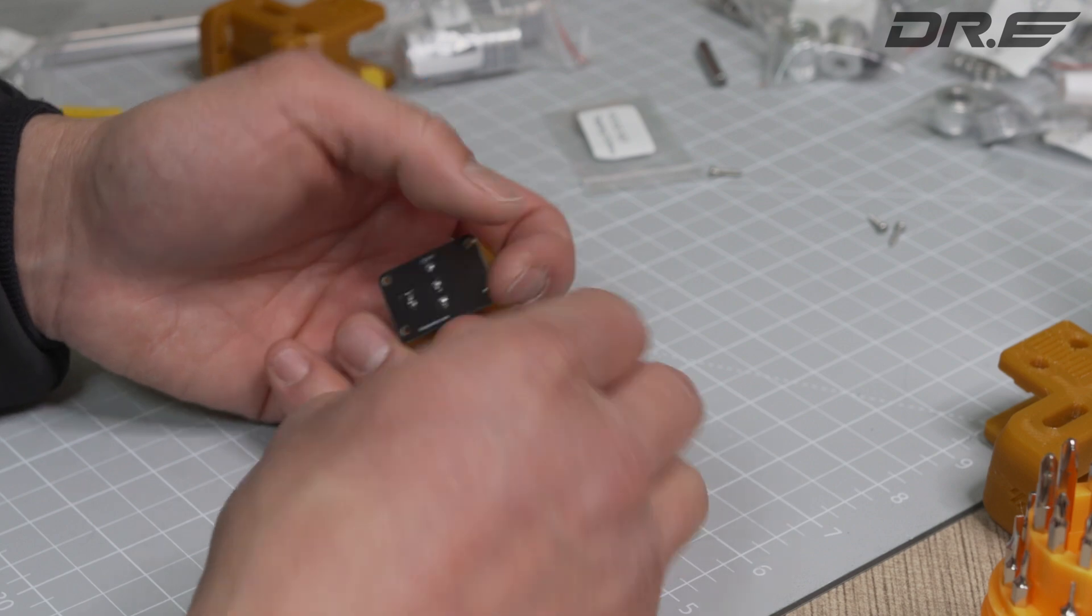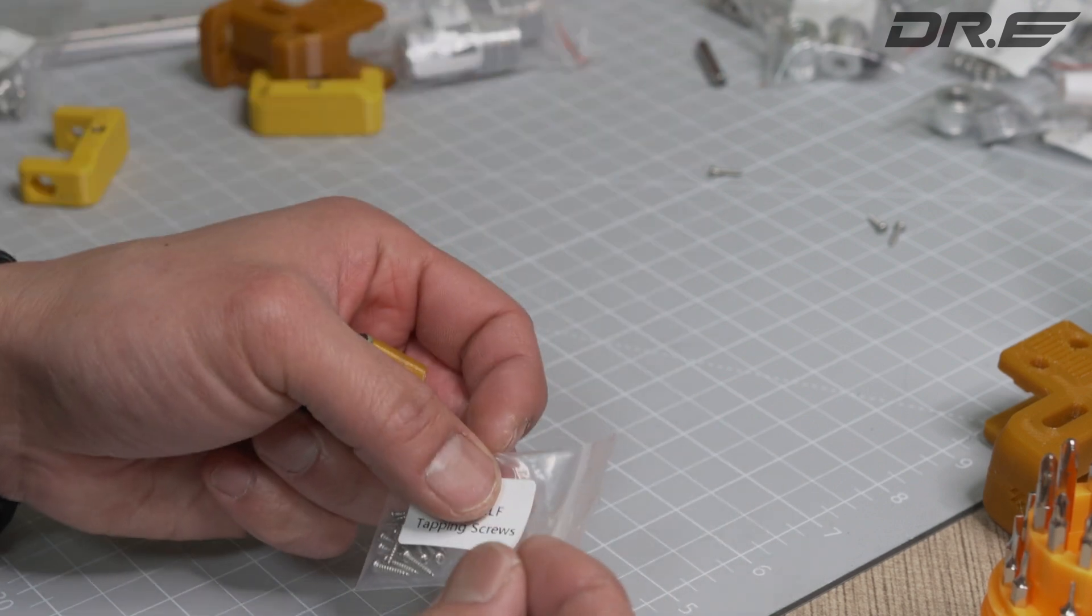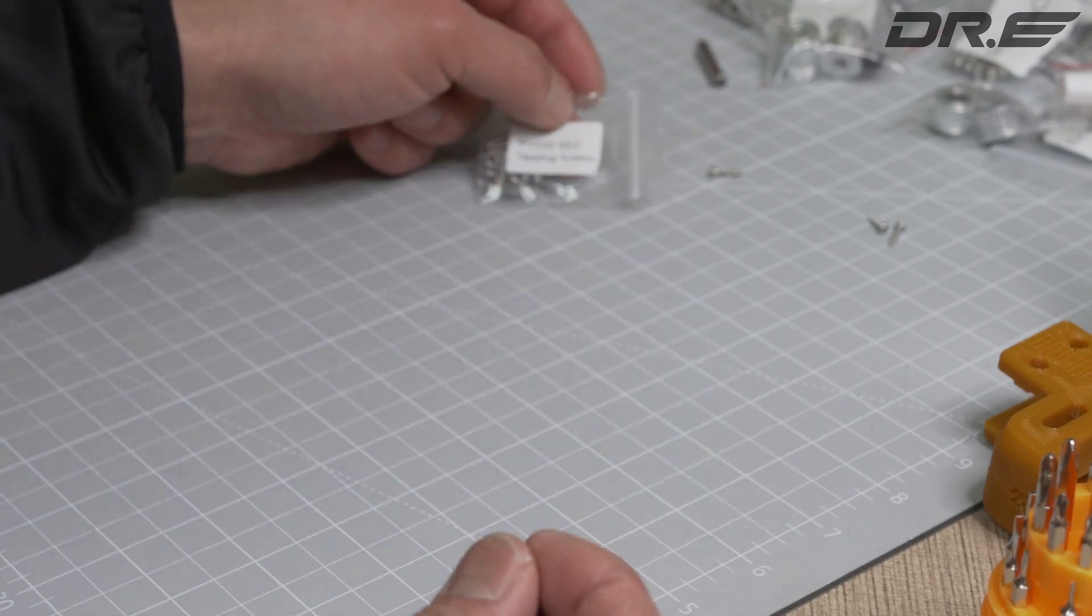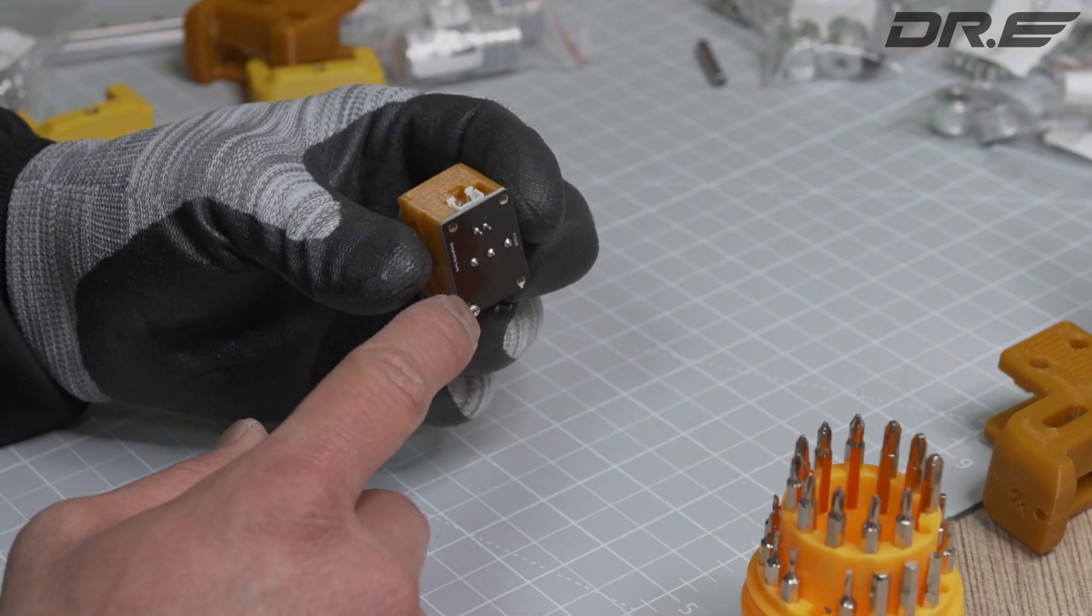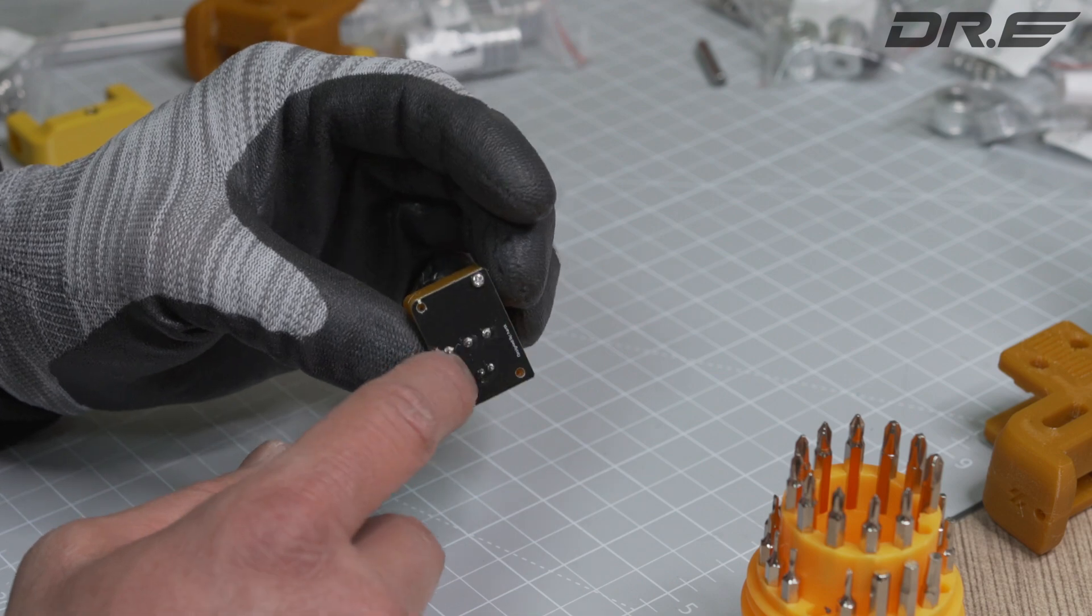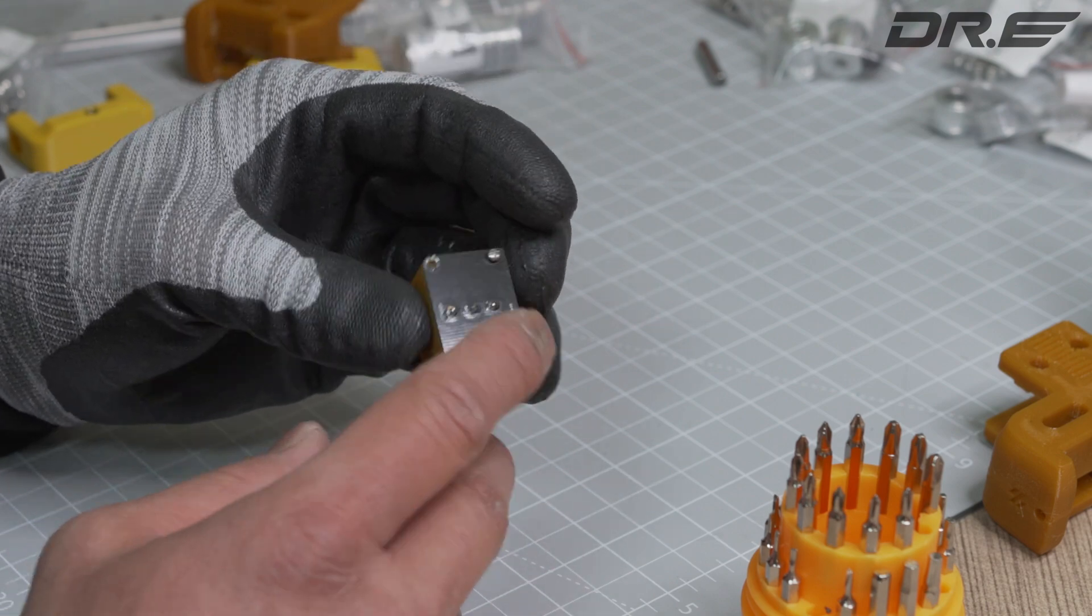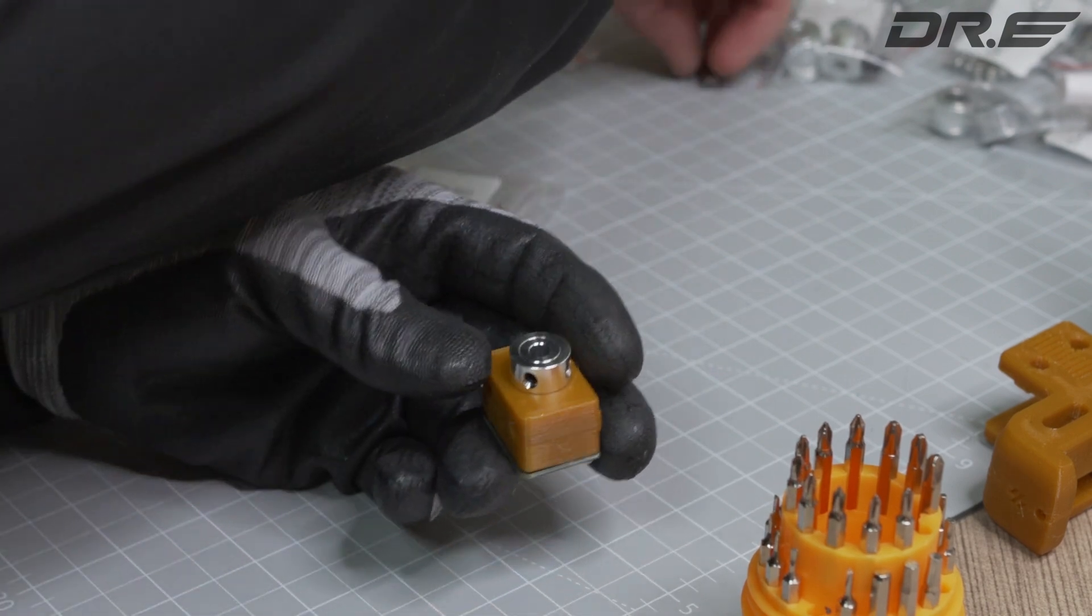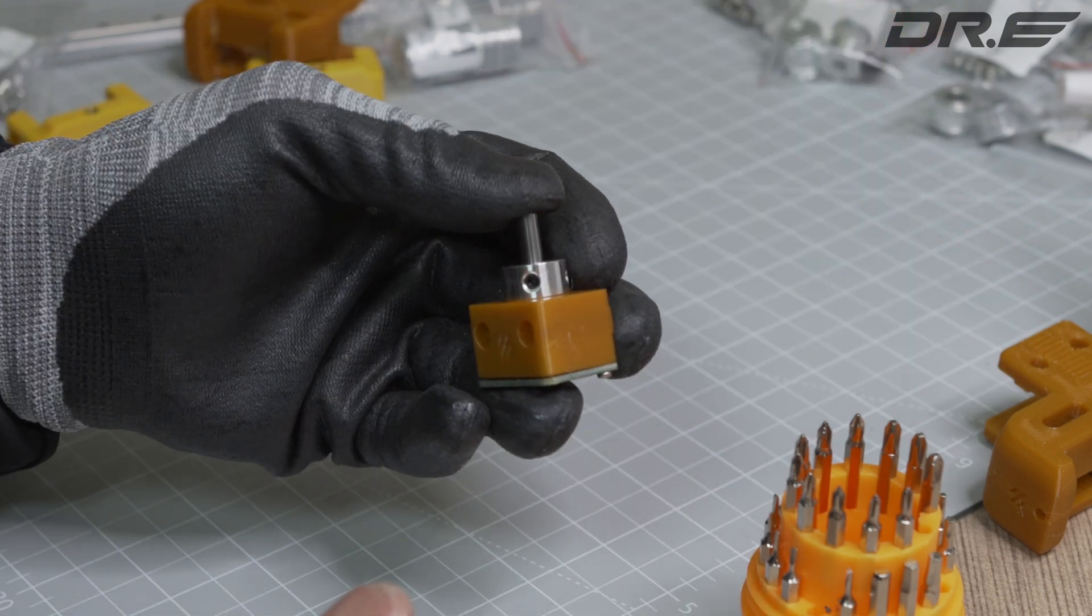Use the M2 by 10 self-tapping screws that come with the kit. These self-tapping screws are pretty difficult to get in, so I'm gonna actually get a drill and drill it. This is how you do it, and we're ready to go.